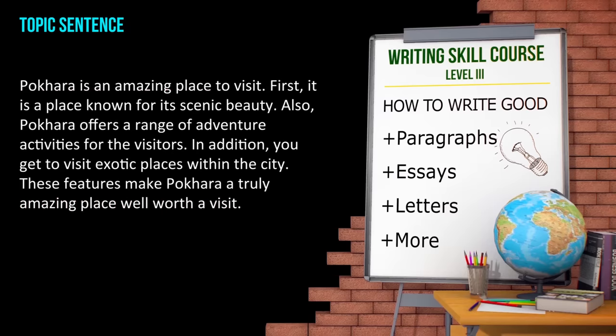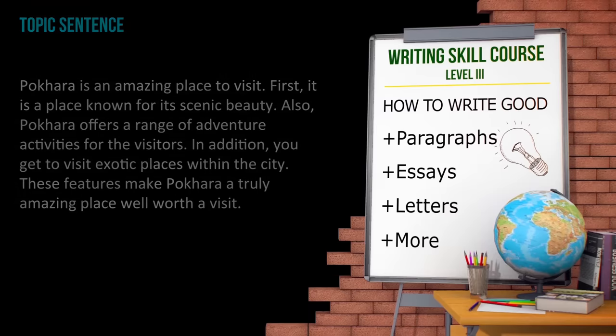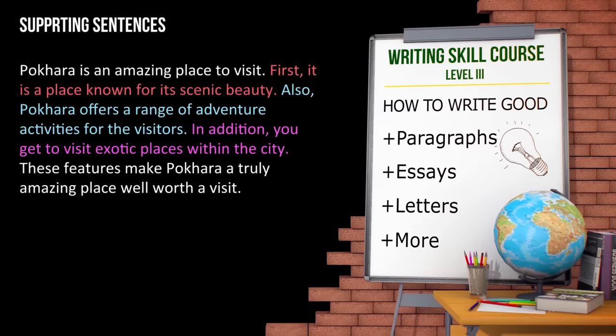Have a look at this paragraph now. It's about Pokhara. What is the topic sentence? 'Pokhara is an amazing place to visit.' The rest of the sentences, which are the supporting sentences, must support why or how Pokhara is an amazing place to visit. In this paragraph, there are three supporting sentences. Let's look at each of them. First, 'it is a place known for its scenic beauty.' Also, 'Pokhara offers a range of adventure activities for the visitors.' In addition, 'you get to visit exotic places within the city.' As you can see, all three supporting sentences support the topic sentence, 'Pokhara is an amazing place to visit.'